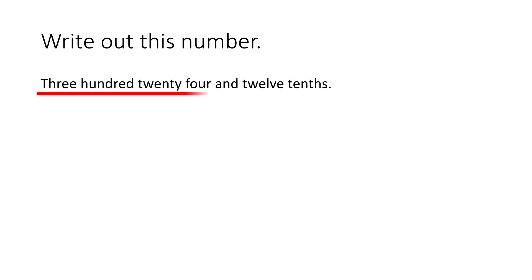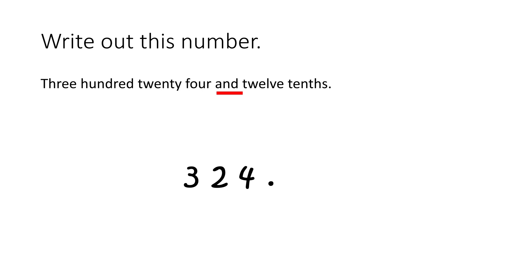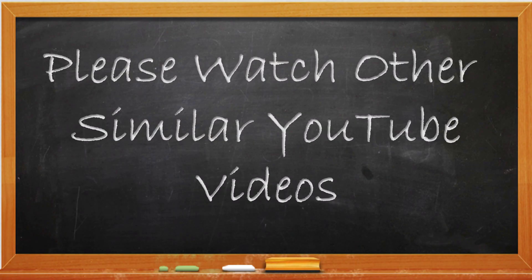Next, write out this number: 324 and 12 tenths. Well, 324 is easy — we simply write out a 3, a 2, and a 4. Next, we see the word "and." Whenever we see the word "and," we know it's a decimal, so we will write out a decimal point. This is why we never say the word "and" when reading numbers to the left of the decimal. And finally, we have 12 tenths — we simply write the number 12 after the decimal. Thank you for watching this video.